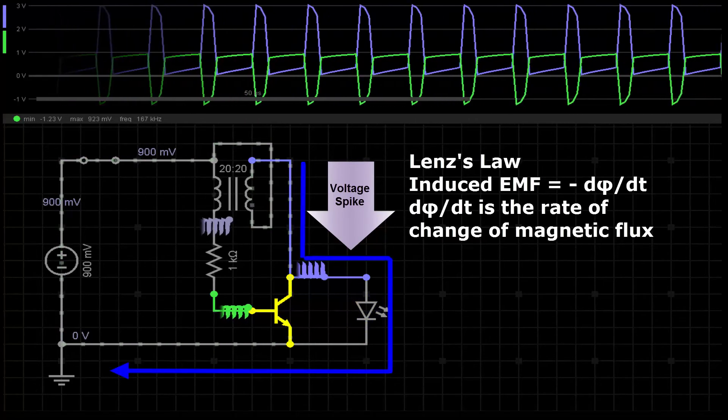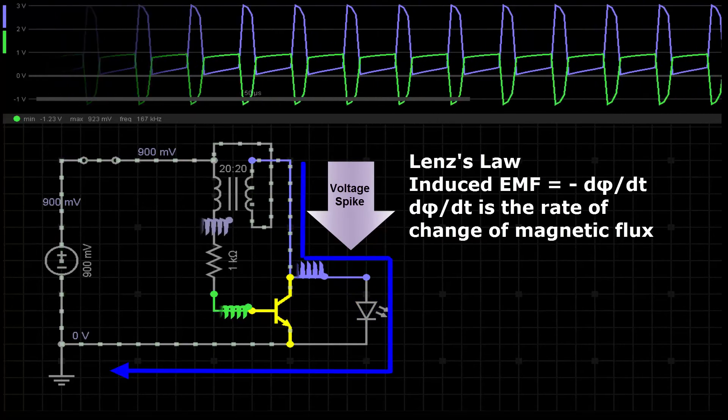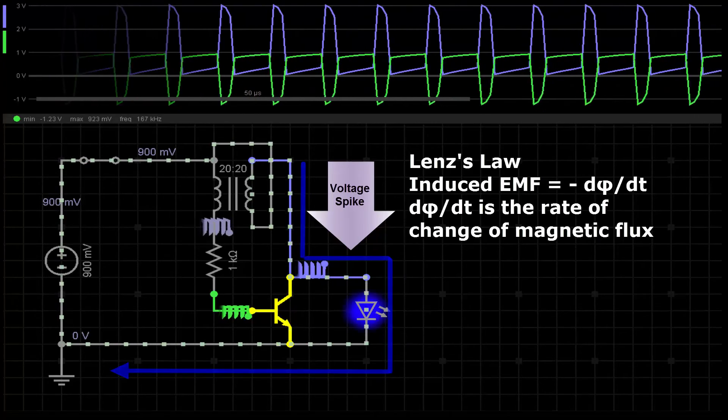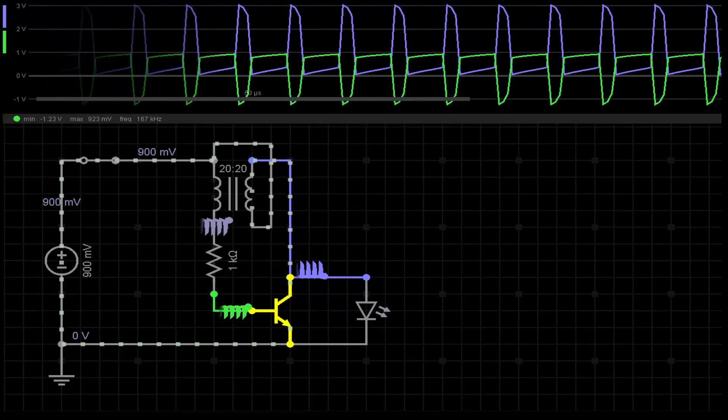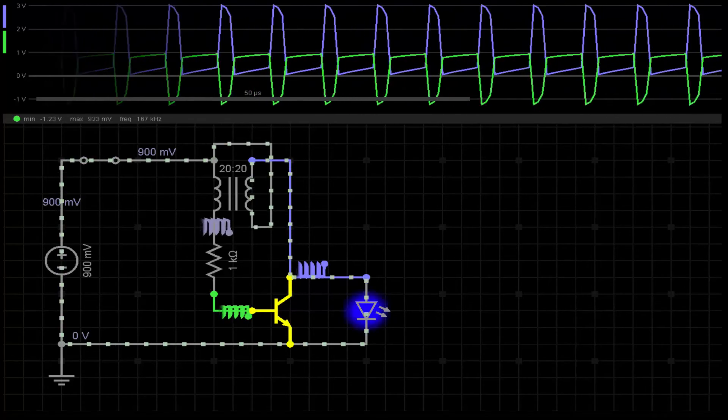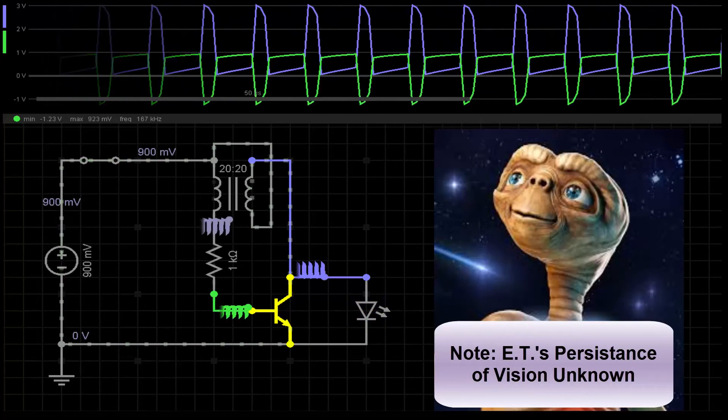the current flows through the LED lighting it briefly and the cycle starts again from the beginning. The blue graph shows the voltage at the LED terminal. The cycle repeats several thousand times a second so it appears to us that the LED is not flashing.